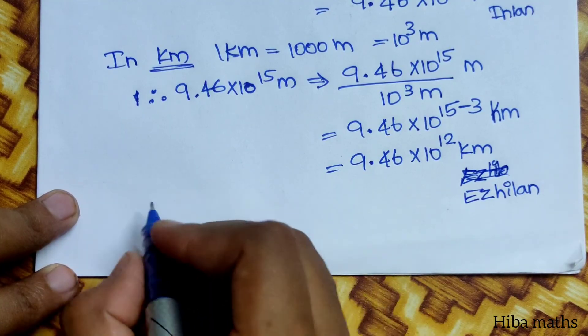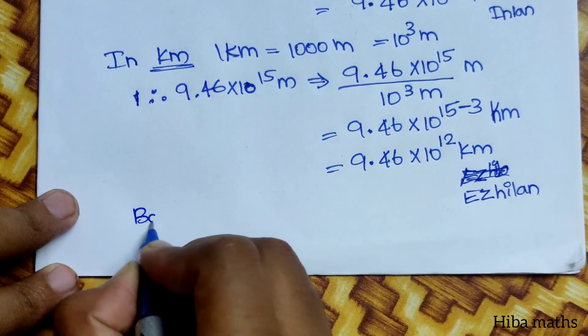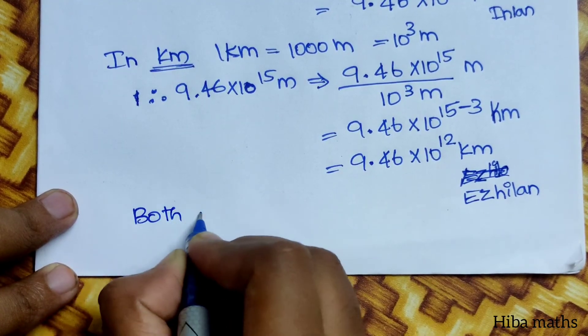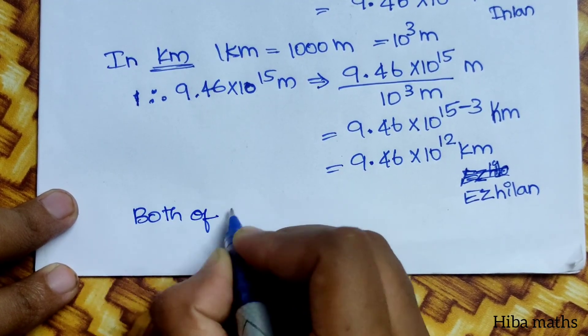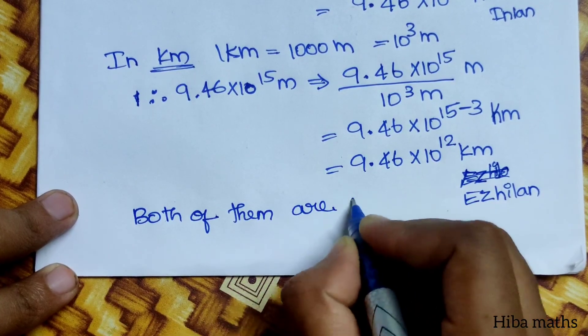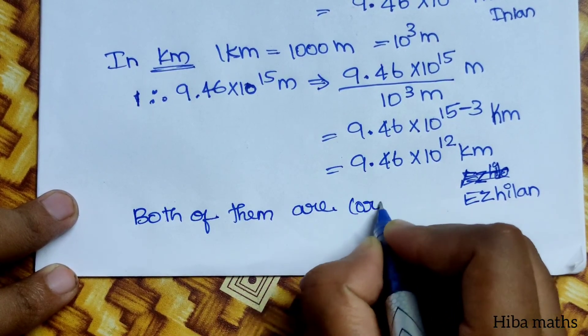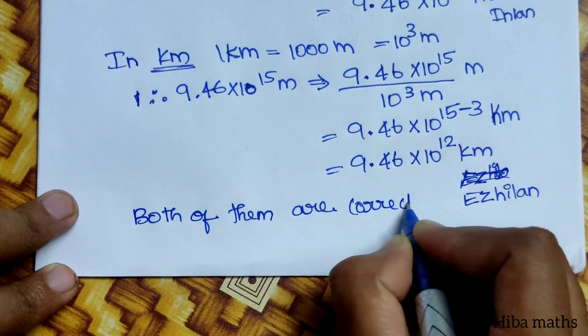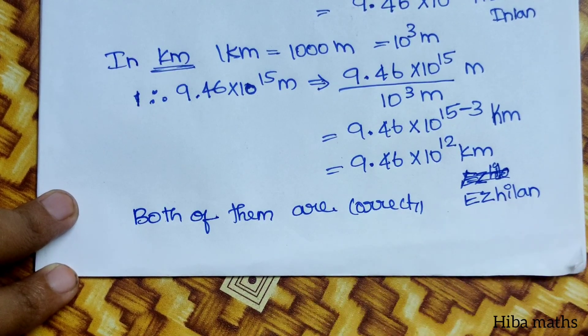So both of them are correct — both Indian and Aryan are correct. Thank you so much for watching.